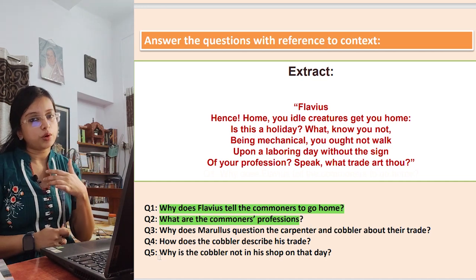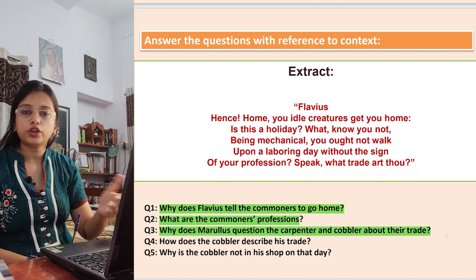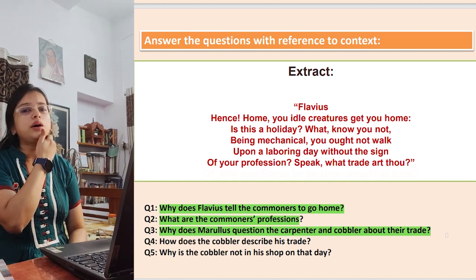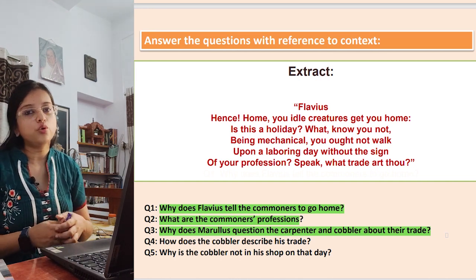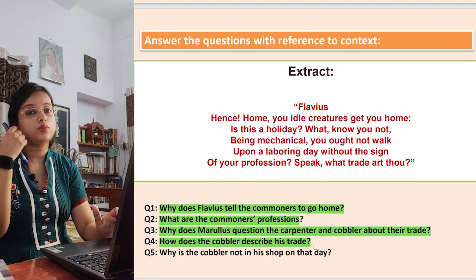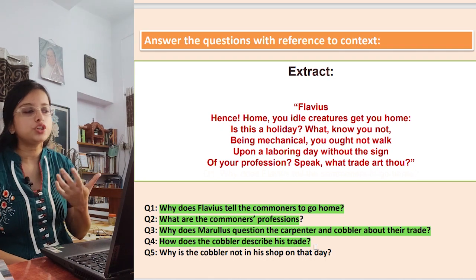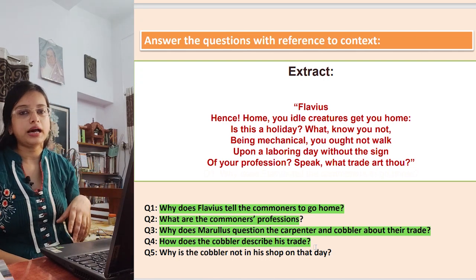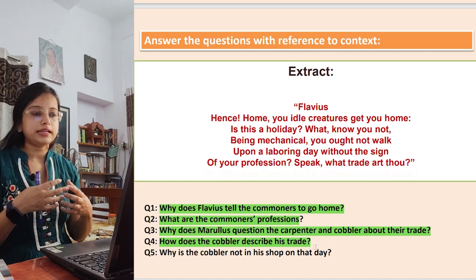Long Answer Q3: Why does Marullus question the carpenter and cobbler about their trade? Marullus questions them to emphasize that as carpenters and cobblers they should not walk around on a laboring day or participate in a holiday celebration for Caesar — they should be at work. Long Answer Q4: How does the cobbler describe his trade? The cobbler describes himself as a mender of bad souls and a surgeon to old shoes. Both phrases must be included.